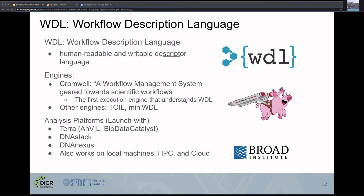Other workflow engines that understand WDL include Toil and Mini-WDL. On DocStore, the analysis platforms you can use to launch WDL workflows include Terra, which also includes the Anvil and BioData Catalyst platforms, which under the hood use the Terra platform. You can also run WDL workflows on DNAstack and DNA Nexus, and you can install Cromwell or another engine to run WDL workflows on your local machines, on HPC clusters, and on your own personal cloud compute instances.